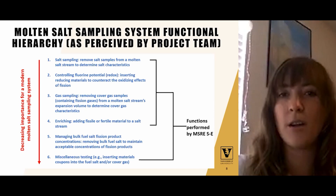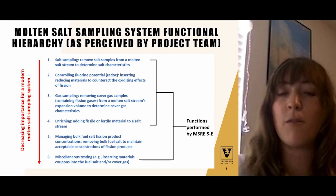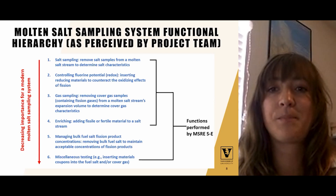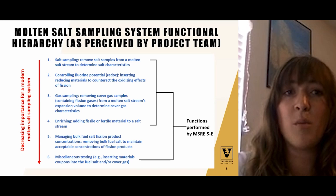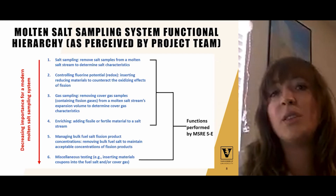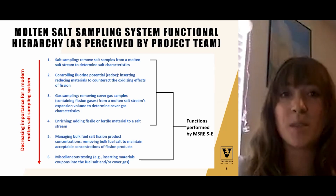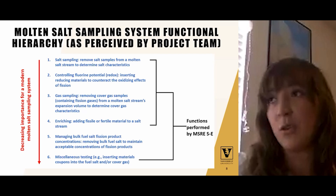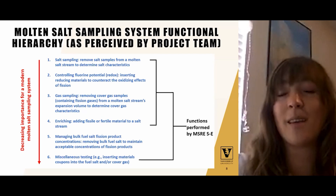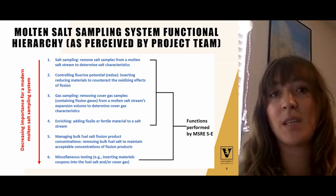We looked at bulk salt removal in light of our efforts aimed at understanding fuel salt sustainability. However, due to the throughput requirements, it's likely not an important function for a molten salt sampling system specifically. Our research to date has indicated that the two most important functions for most MSR concepts will likely be the sampling itself as well as redox potential control. We recognize that the exact functionality is impacted by reactor-specific considerations such as salt composition or reprocessing scheme, and we would appreciate any feedback on these functions as they relate to your reactor designs.